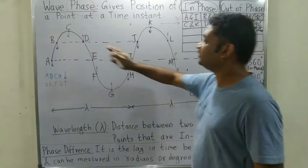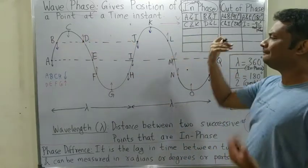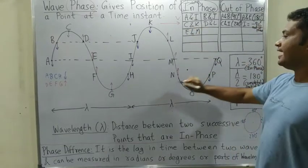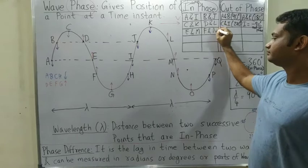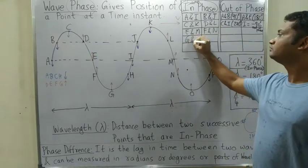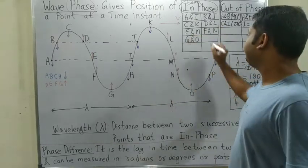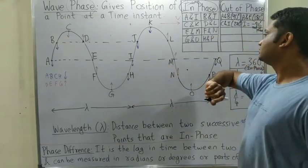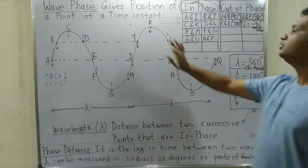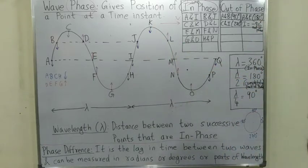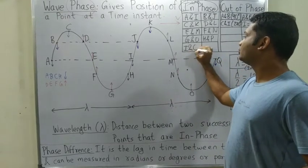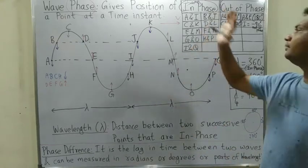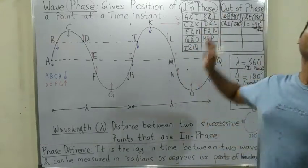So D and L are in phase — D is going up, L is also going up. Many more examples: E and M, F and N, G and O, H and P. Also I and Q — both are moving in the downward direction. You can fill this column with all in-phase point pairs.